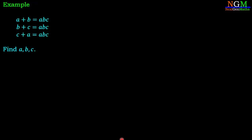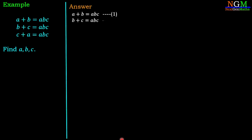The problem is: A plus B equals ABC, B plus C equals ABC, and C plus A equals ABC. Find the values of A, B, and C. We have three equations: A plus B equals ABC as equation 1, B plus C equals ABC as equation 2, and C plus A equals ABC as equation 3.